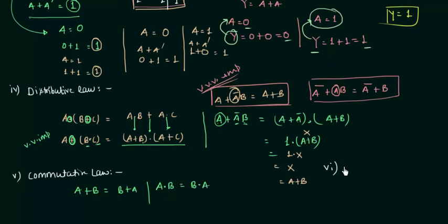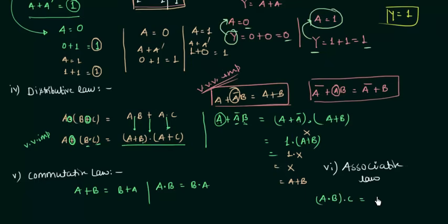The sixth rule is the associative law. If we have (a AND b) AND c, it is equal to a AND (b AND c). In the first case we compute a AND b first, then AND with c; in the second case we compute b AND c first, then AND with a. The output is the same in both cases.